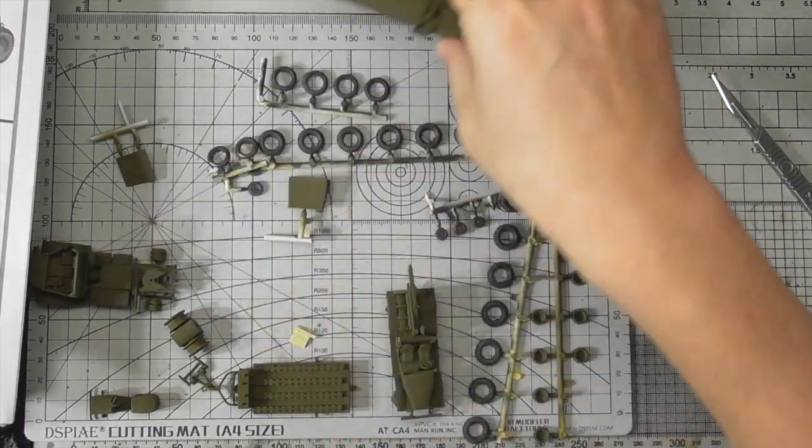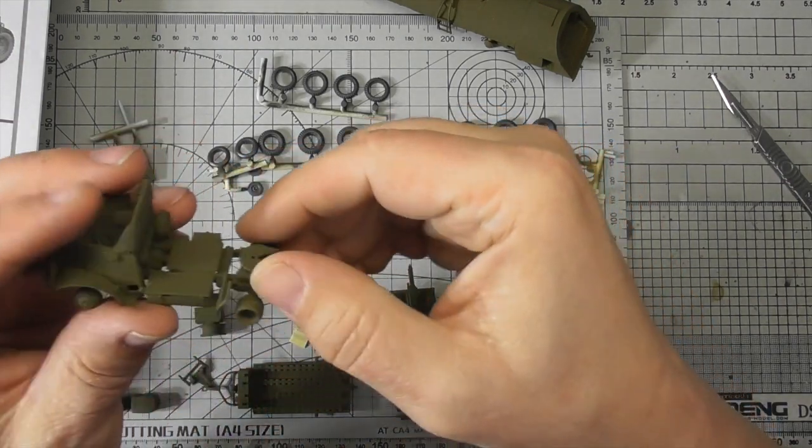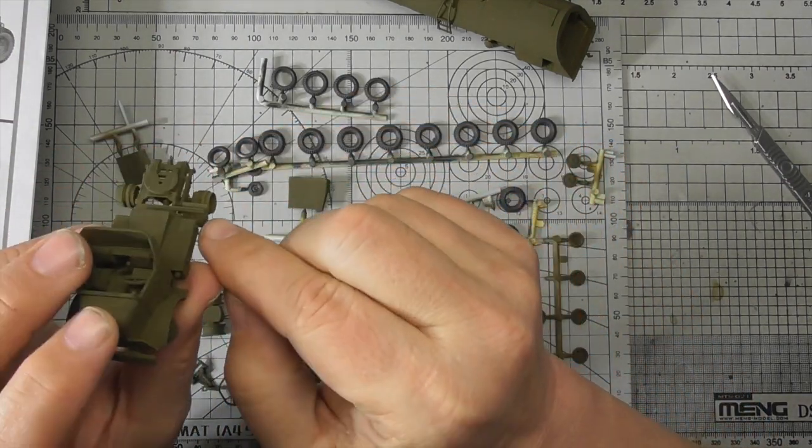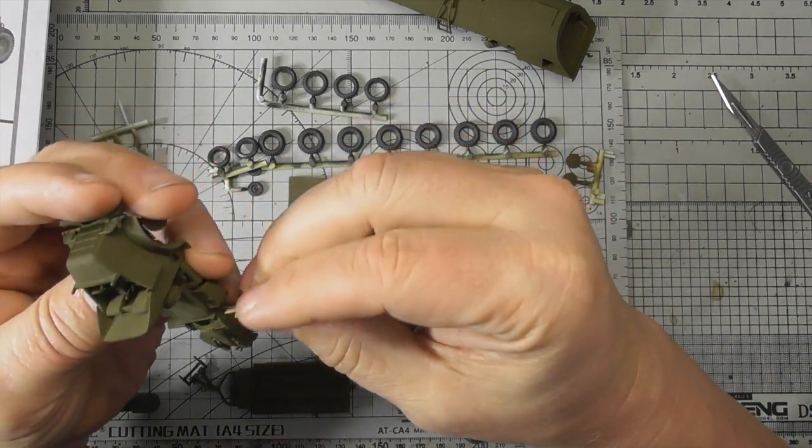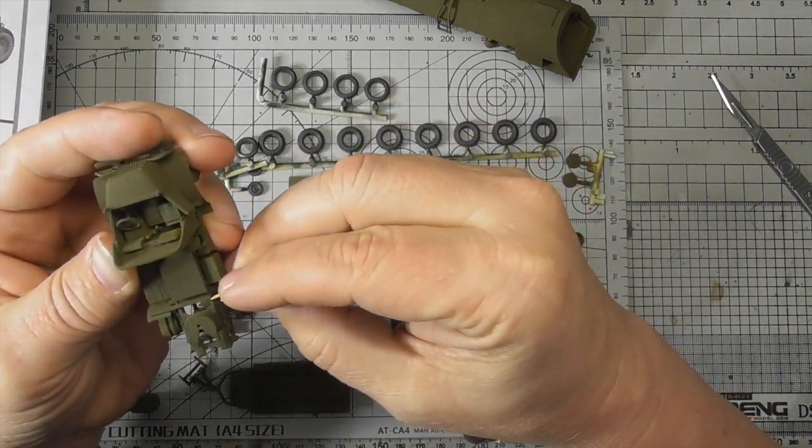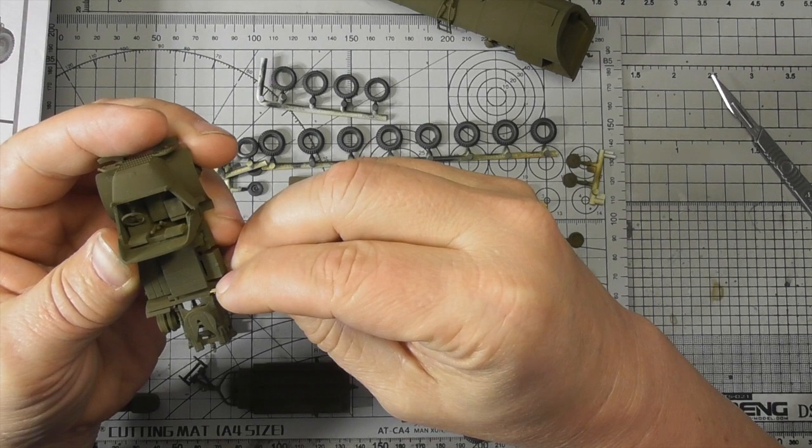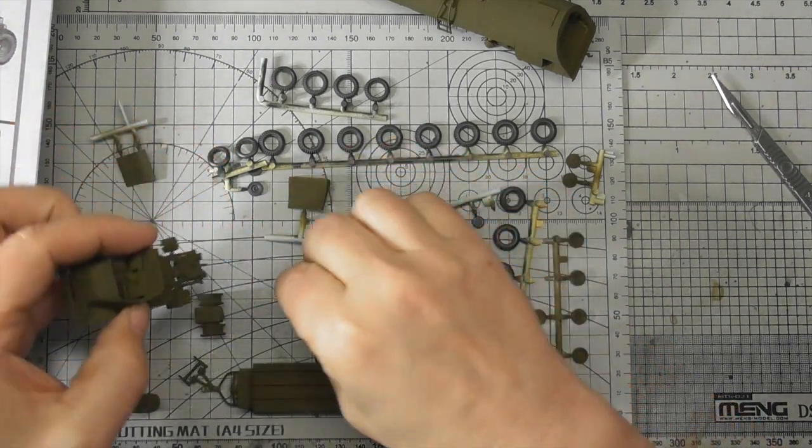This part is one of the flaps. This part broke off of this side and I didn't know that when I painted it. So I'm going to paint it by hand and glue it back on.